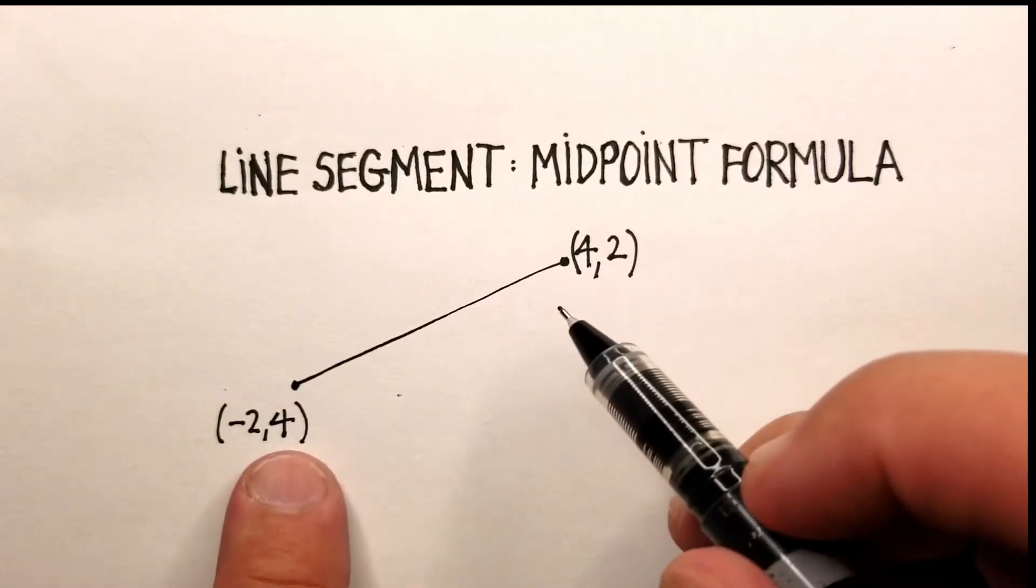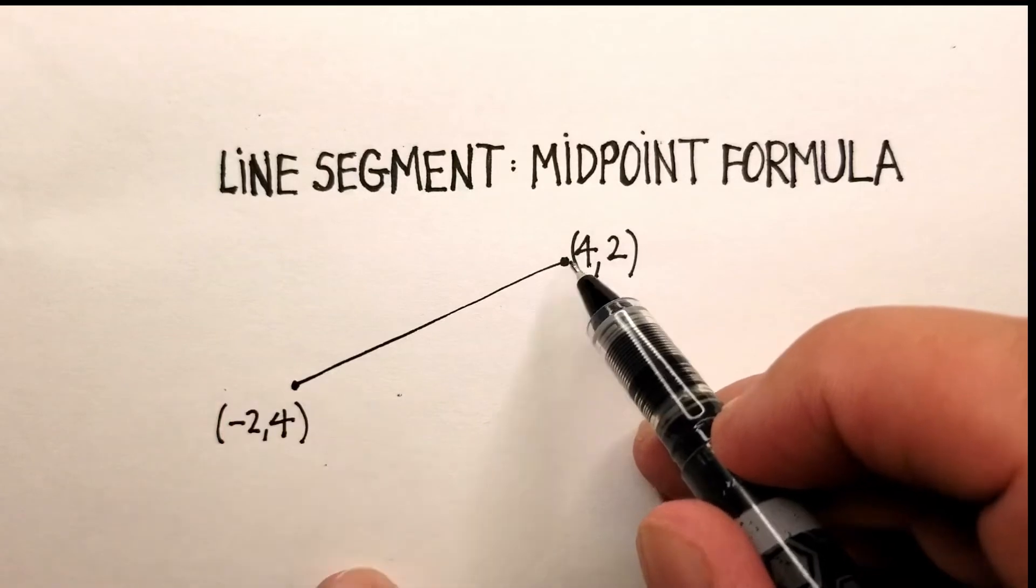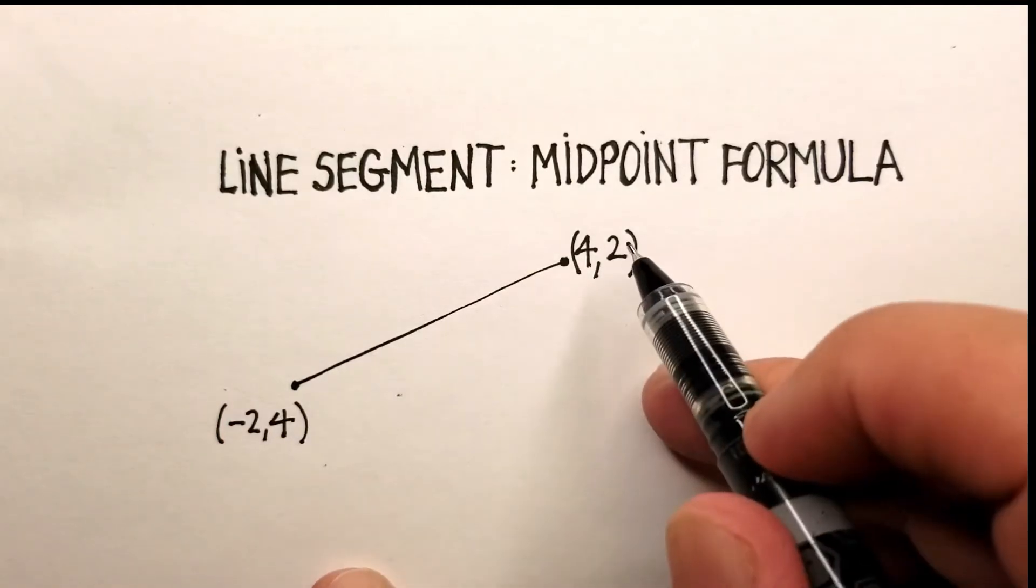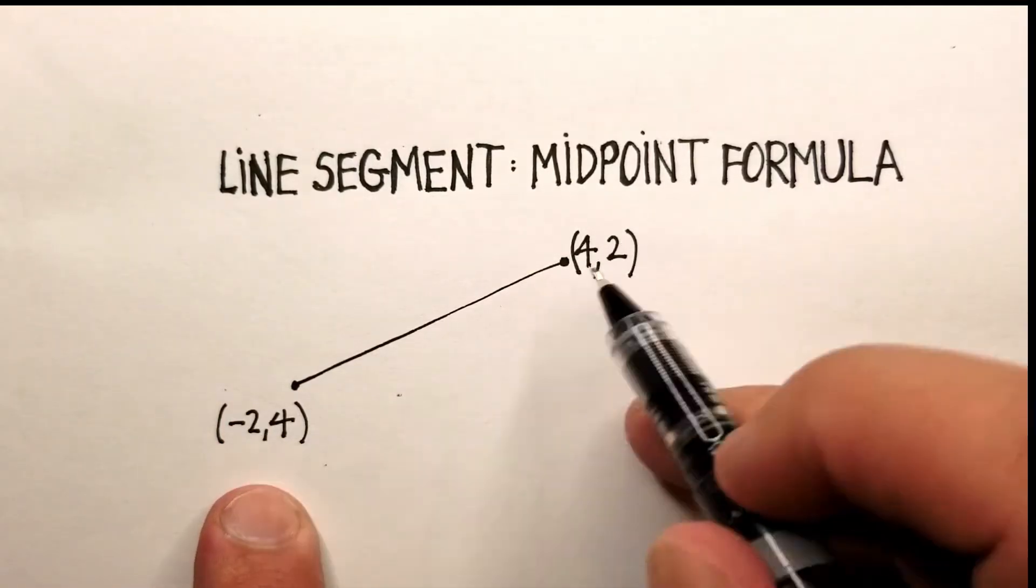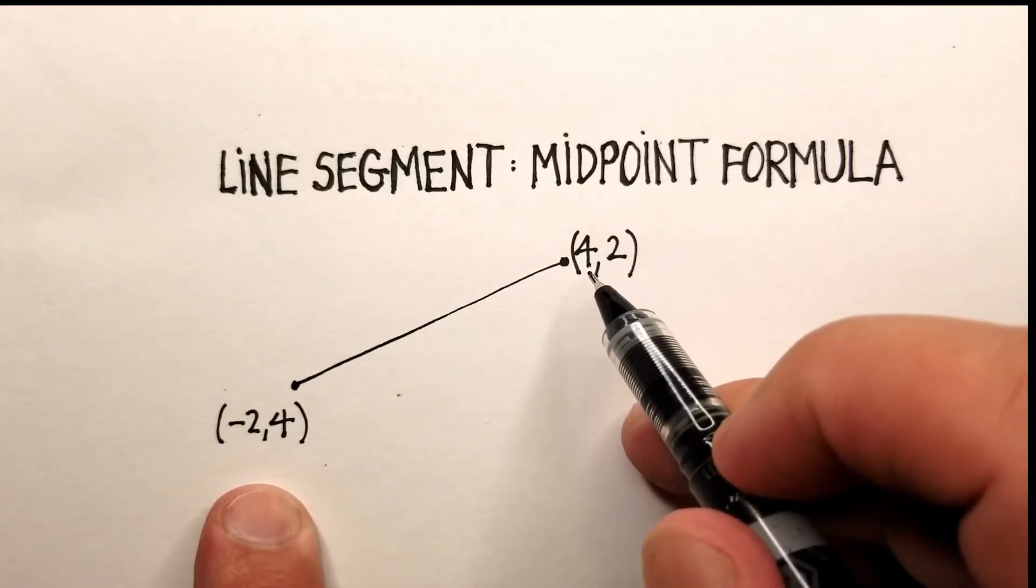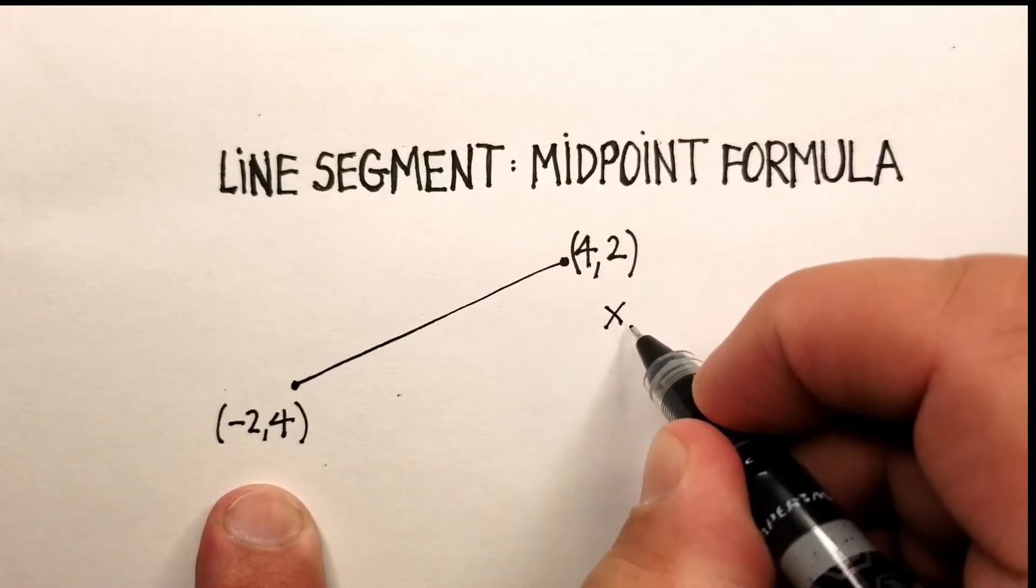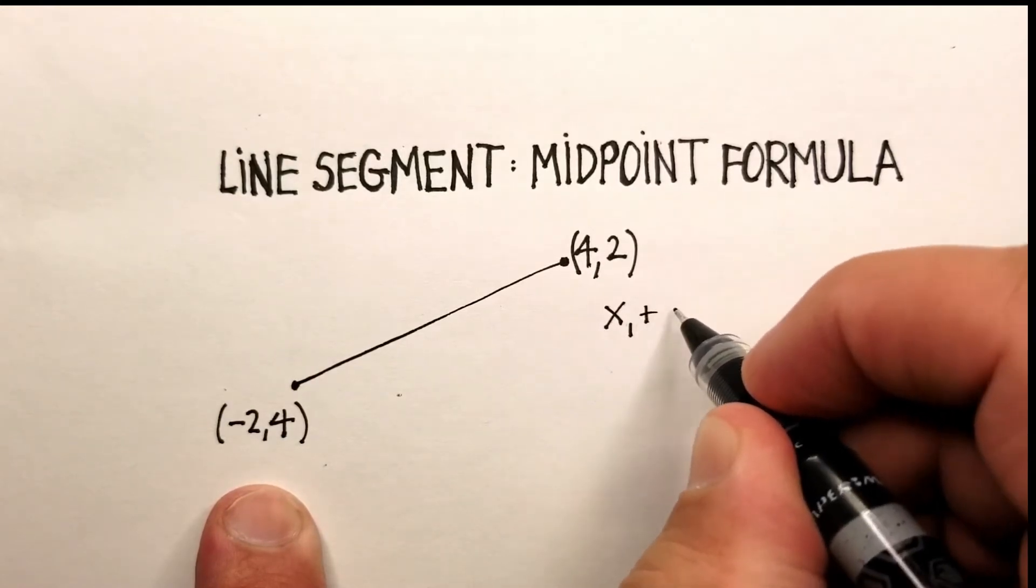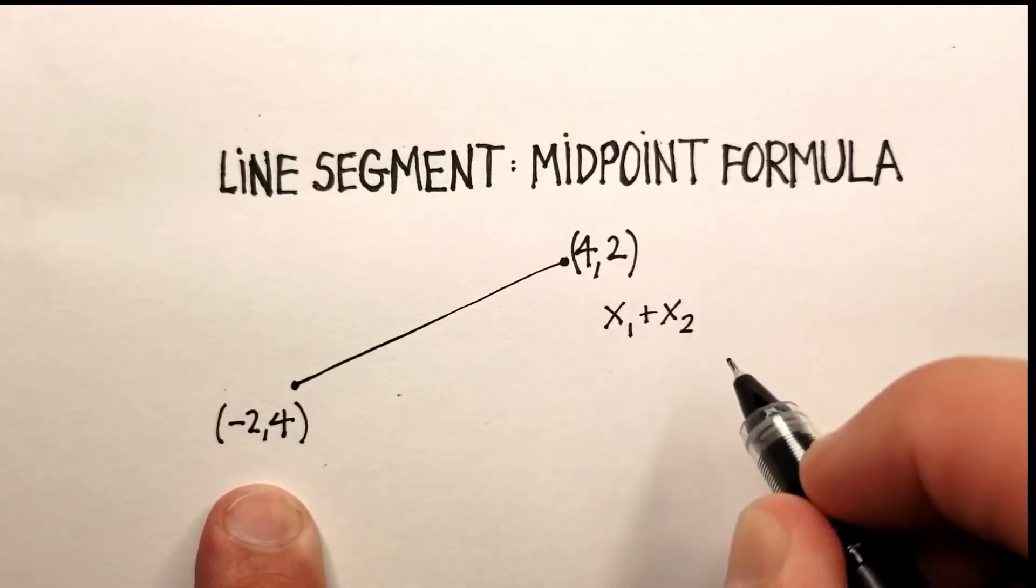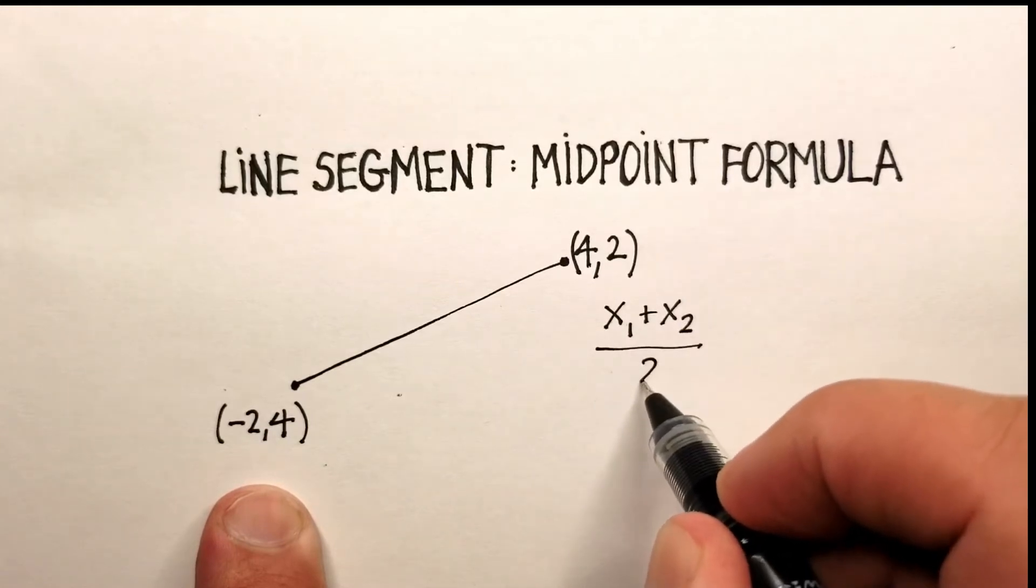At each end of a line segment, you have what are called the end points, and you need to know the coordinates at each one of the end points. And the midpoint formula is pretty simple.